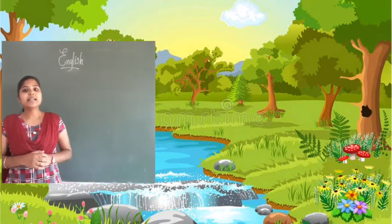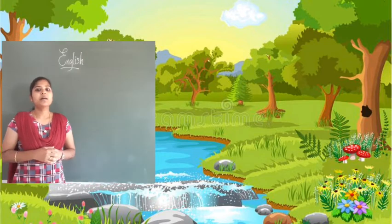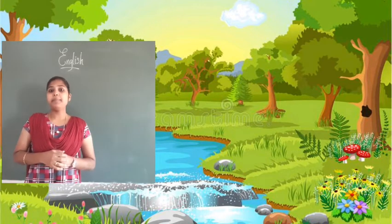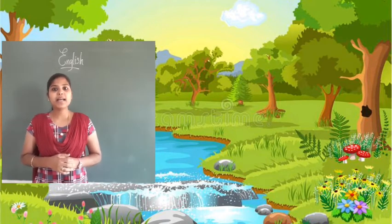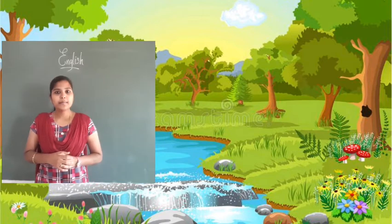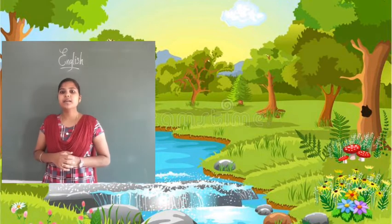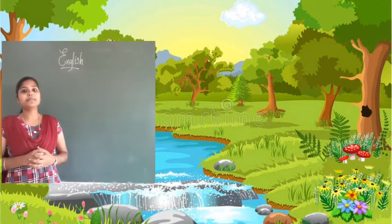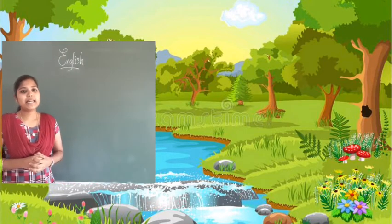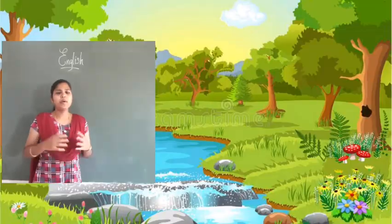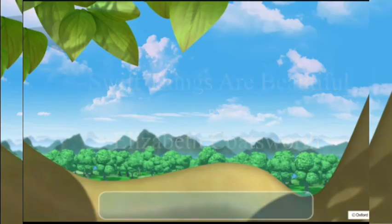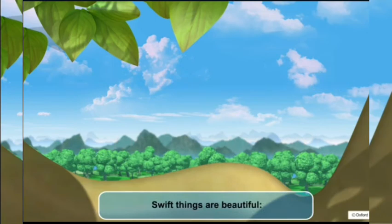Students, in our last class what did we learn? We learned a poem. Who was the poet? Very good — Elizabeth Coatsworth. And what was the title of the poem? Swift Things are Beautiful, by Elizabeth Coatsworth.